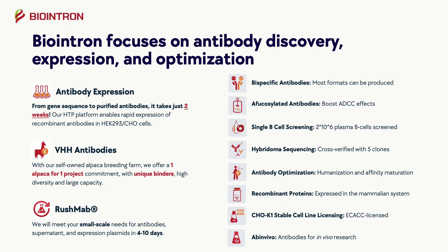We will also meet your small-scale needs for antibodies, supernatants, and expression plasmids in 4 to 10 days with our RushMab services. We also have several other services including bispecific antibodies, afucosylated antibodies, single B cell screening, hybridoma sequencing, antibody optimization, recombinant proteins, CHO-K-1 stable cell line licensing, and added in vivo catalog products for in vivo research.